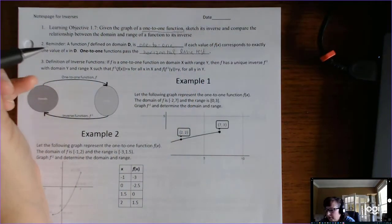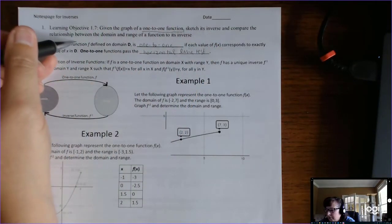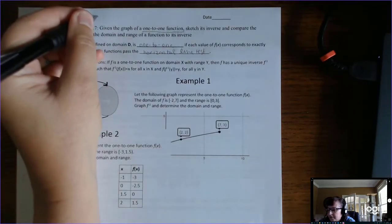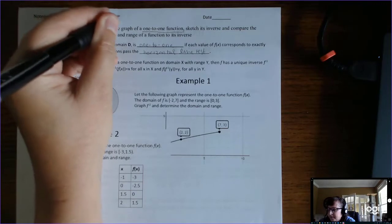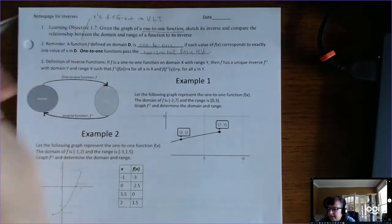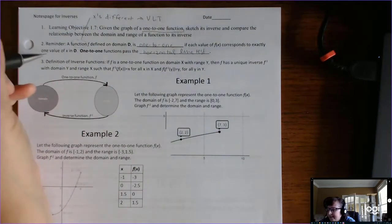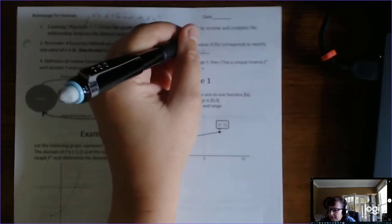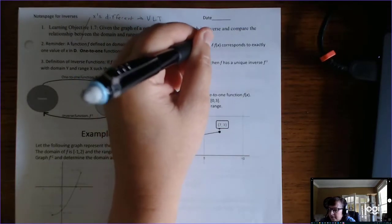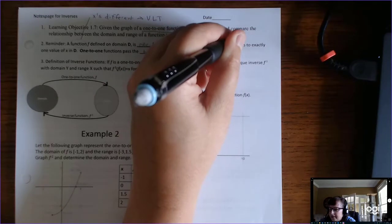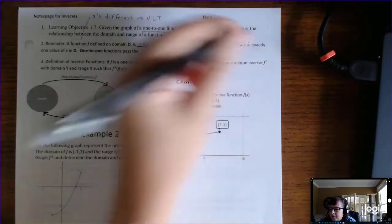Earlier in the semester, we talked about what a function is. For a function, the x's have to be different, and the way to test that is with the vertical line test. For a 1-to-1 function, the y's have to be different as well, and that test is the horizontal line test.